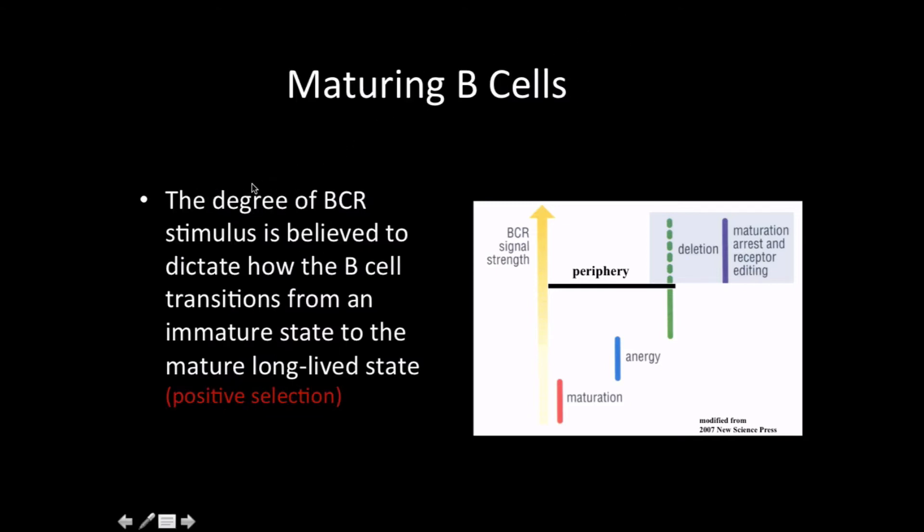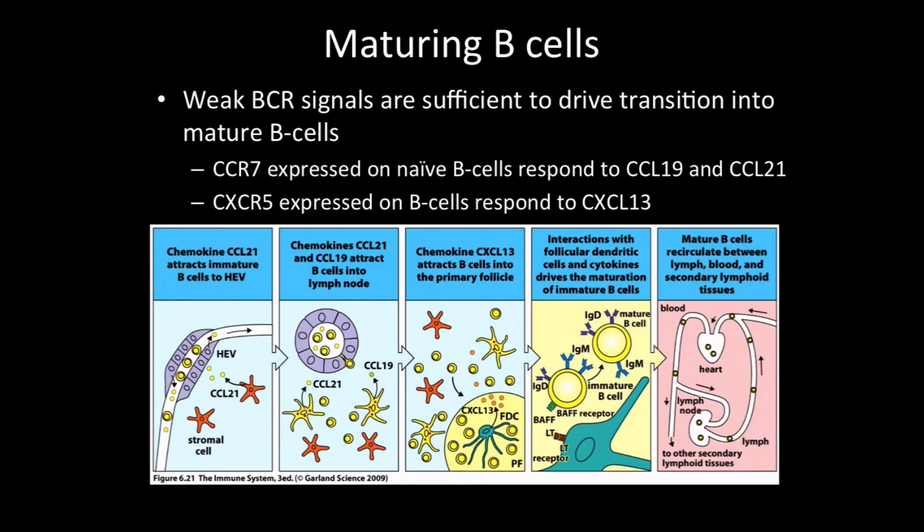For maturing B-cells, the degree of B-cell receptor stimulus is believed to dictate how the B-cell transitions from immature to mature state. This is positive selection. I want my B-cells that are very strongly reactive, especially in the presence of antigens, to be the ones fighting bacteria and viruses. Weak BCR signals are sufficient to drive transition into mature B-cells. CCR7 is expressed on naive B-cells in response to CCL19 and CCL21. CXCR5 is expressed on B-cells in response to CXCL13. These are all chemokines - the R stands for receptors, and the L stands for ligands.